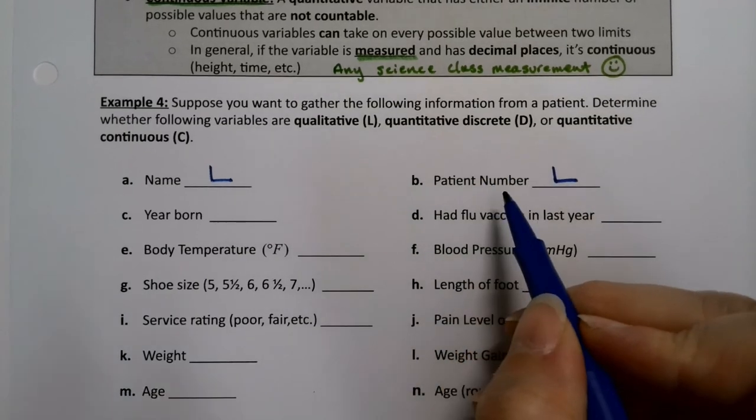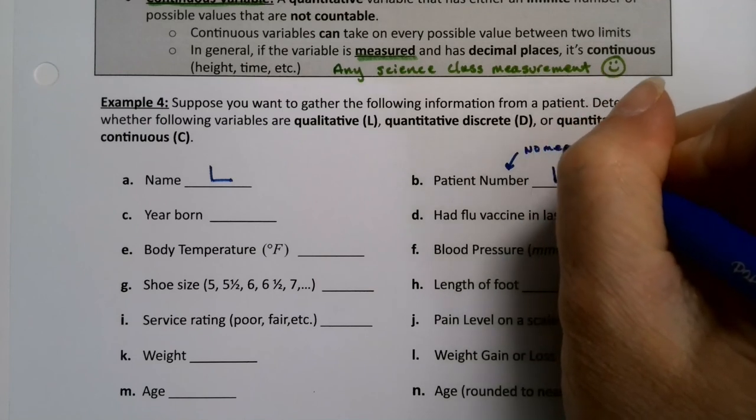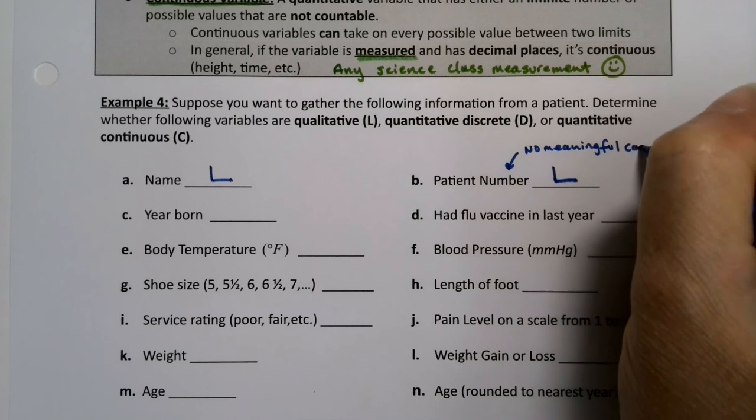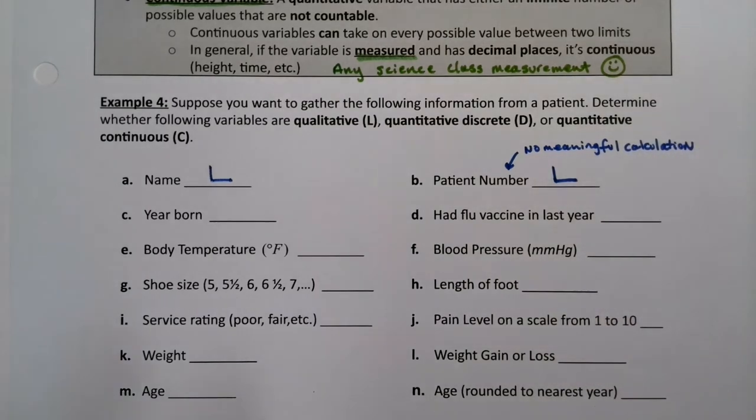Same thing with patient number. There's a tricky one. Because even though it's a number, there's no meaningful calculation. It's like the social security number. It's not like I can just, if you want to think about a meaningful calculation, always think about the mean. Can you add them up and divide by how many there are? Which you probably think of as average. But again, it's not the only type of average there is. But nevertheless, can you find that? Can you find that arithmetic mean? If you can't, then it's not quantitative. It's qualitative.